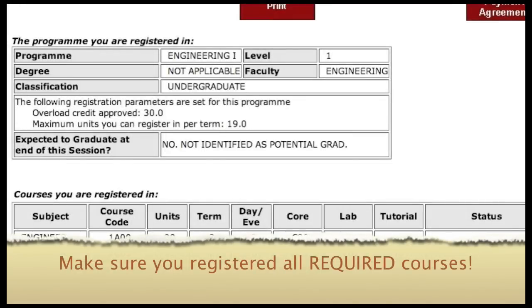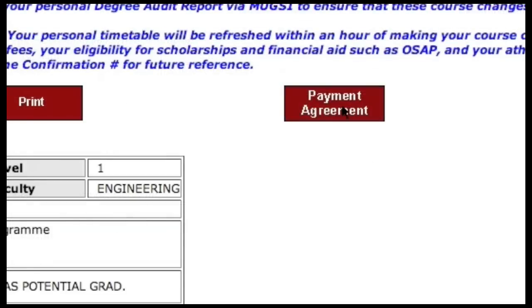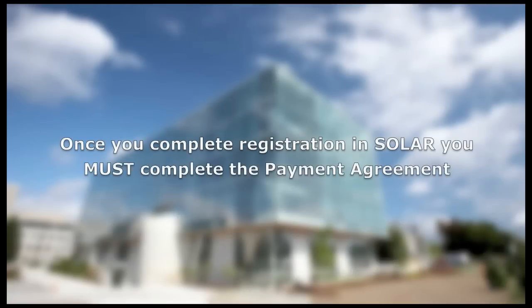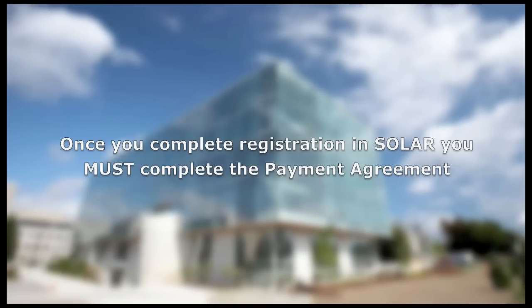Click OK to continue. Your personal timetable will be available on MUGSI shortly. You will now be shown a summary of all of your courses — make sure you've registered for all required courses. When you're finished, click on the Payment Agreement button. Once you've completed course registration in SOLAR, you need to complete the Payment Agreement step. If you don't complete the Payment Agreement, the courses you just selected will be deleted, so you must complete it to finish your registration.